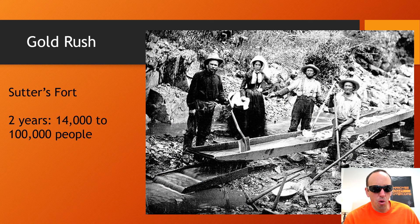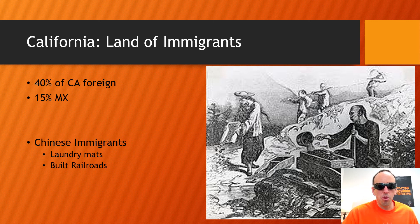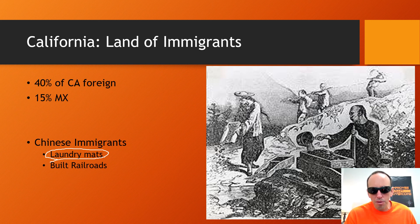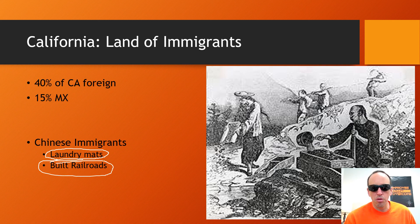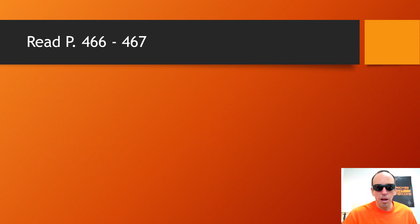We'll talk about Sutter's Fort real quick. Look at the explosion of people — from 14,000 to 100,000. Also note the influx of Chinese immigrants. What I want to emphasize is that these Chinese laborers are going to build the transcontinental railroad, blasting tunnels through the Sierra Nevada and putting their lives on the line to make the railroad happen. That's it for today — hope you enjoyed this lesson, and we'll see you back here soon!